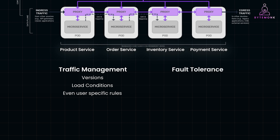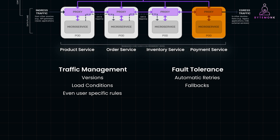Also, in a microservices environment, failures are inevitable. A service mesh helps by automatically handling retries and fallbacks. If the payment service becomes unresponsive, the service mesh will retry the request based on predefined rules. It can also reroute traffic to alternative services or degrade functionality gracefully.